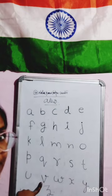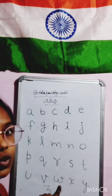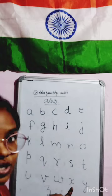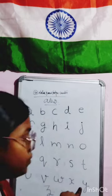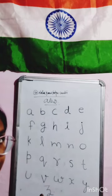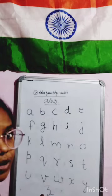V for Van, Van means Gaadi. W for Watch, Watch means Ghadi. X for X-ray. Y for Yak. Z for Zebra, Zebra means Zebra.